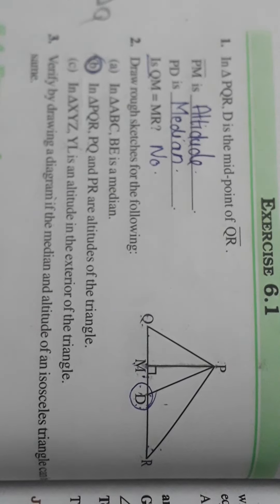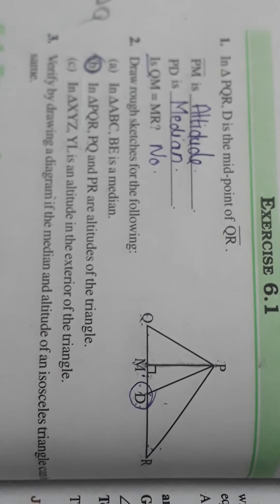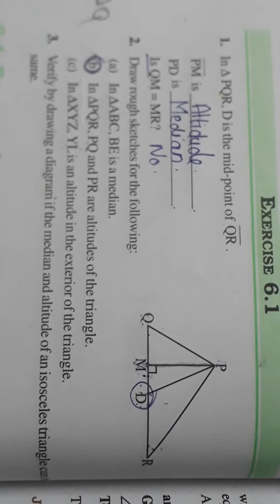Next question says triangle PQR. PQ and PR are the altitudes of the triangle.